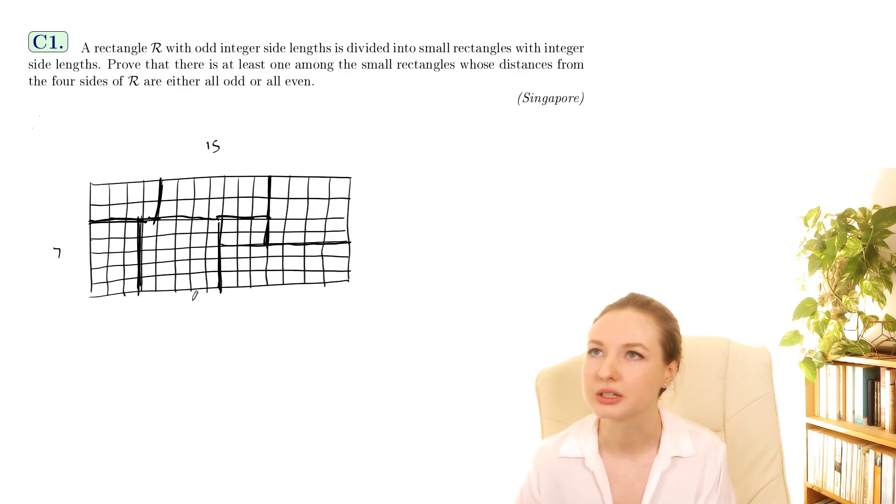Prove that there is at least one among the small rectangles whose distances from the four... okay so what does that mean distances from the four sides? Let's just pick one of these rectangles like this one for instance.